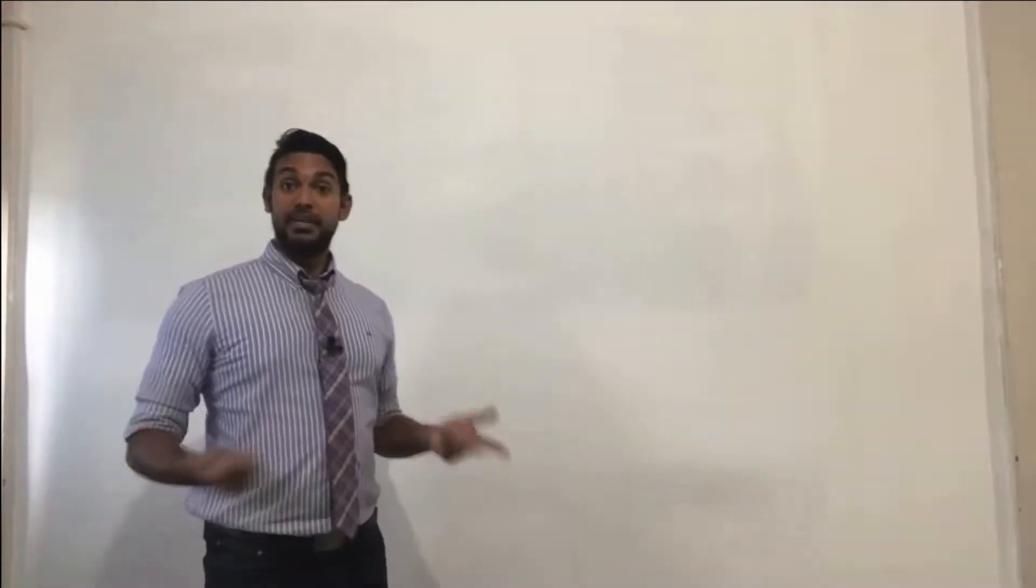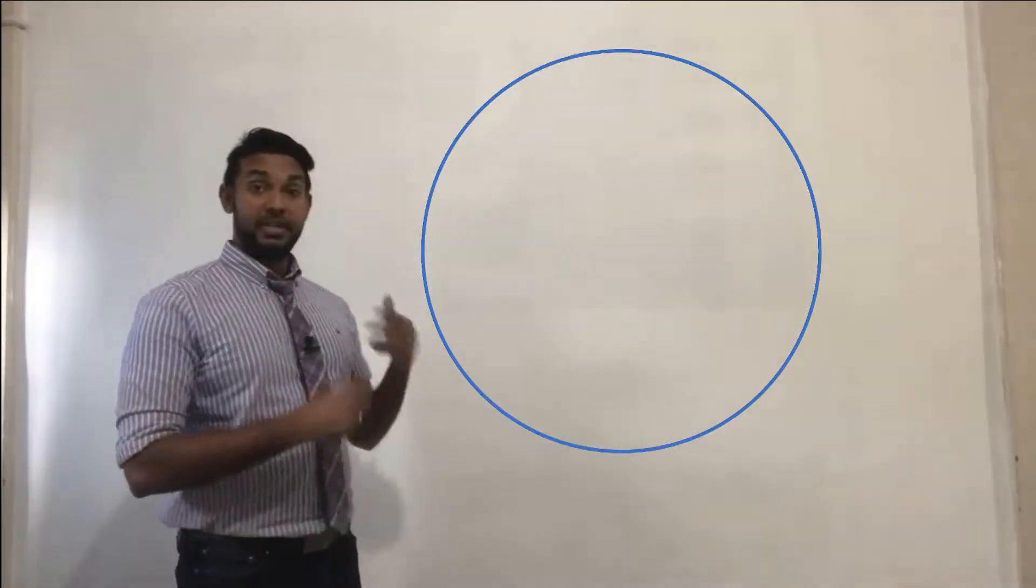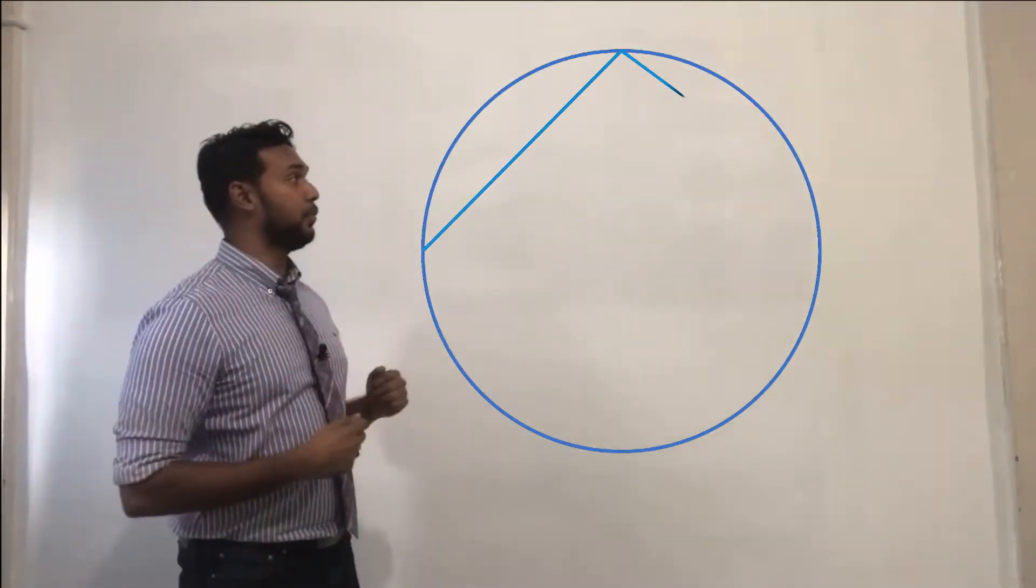So the first thing we're going to need is a circle. So let's get a circle going there. Now we need a cyclic quadrilateral inside of the circle. So let's get that going too.